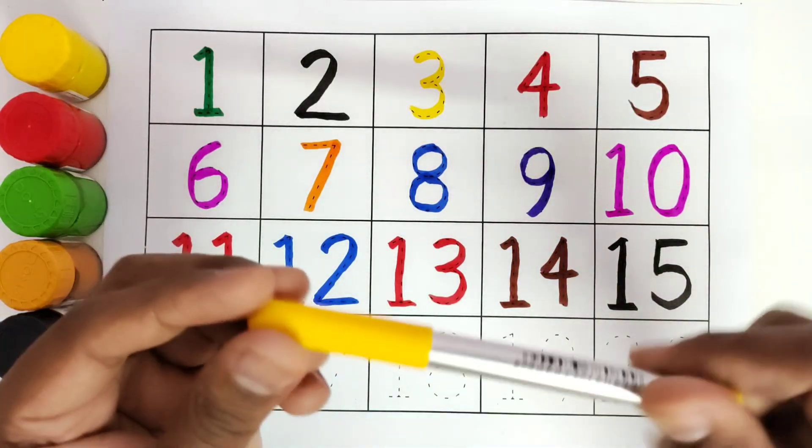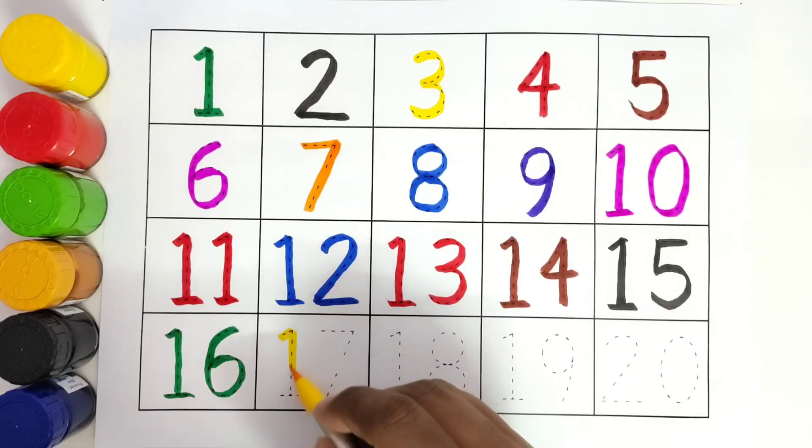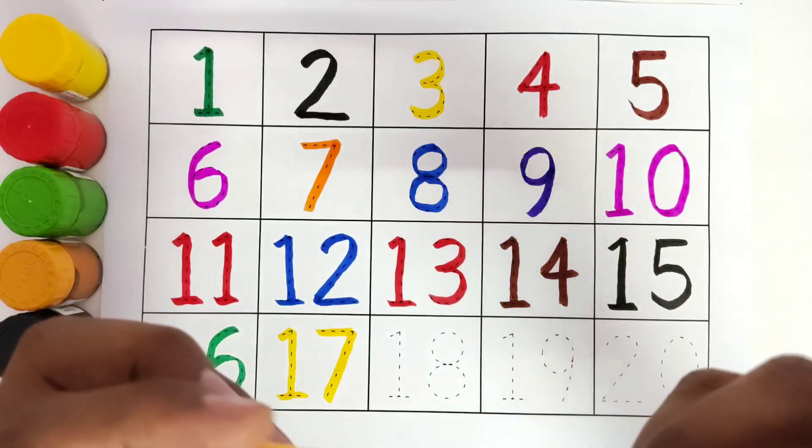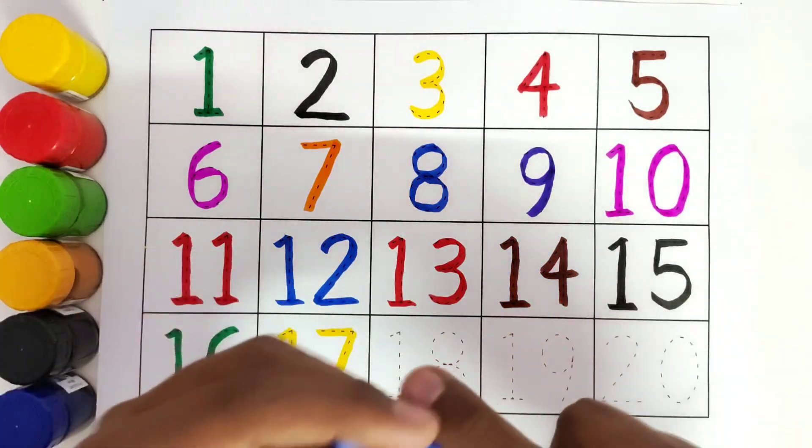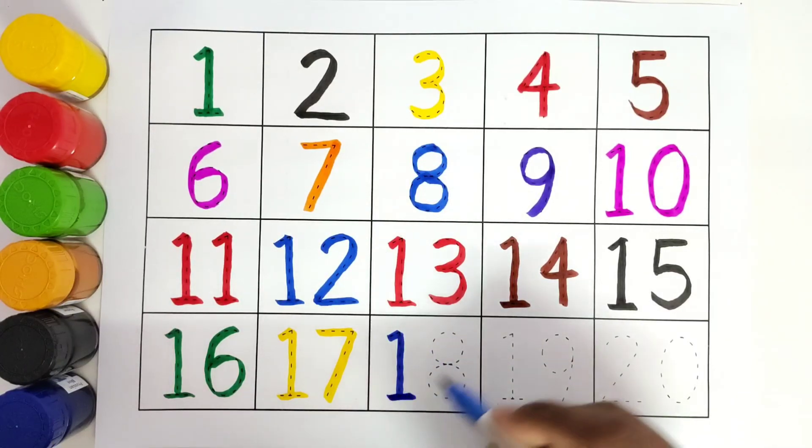This is yellow color. Number 17. 1, 7. 17. This is blue color. Number 18. 1, 8. 18.